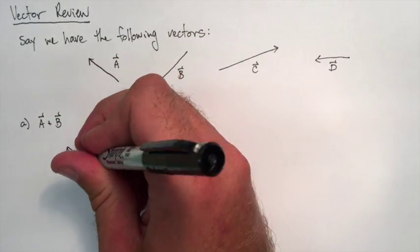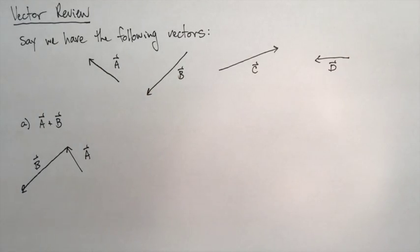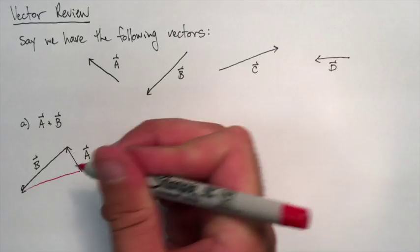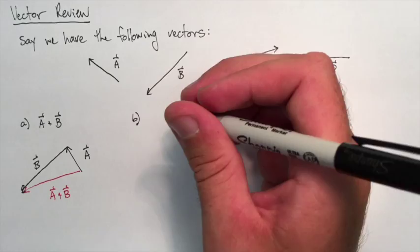So pretend we pick up A and lay it down. We pick up B and lay it down there. We line them tip to tail, and we draw in the resultant vector, the tail of the first vector to the tip of the last one. So there it is in red, A plus B.